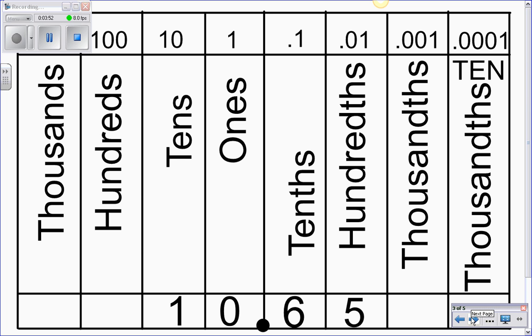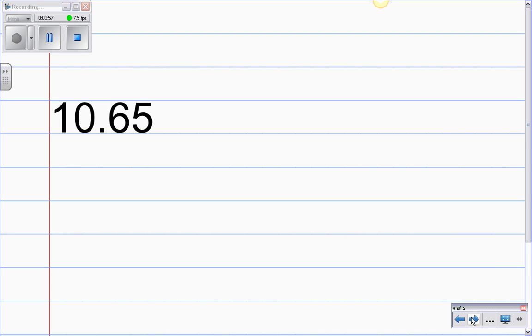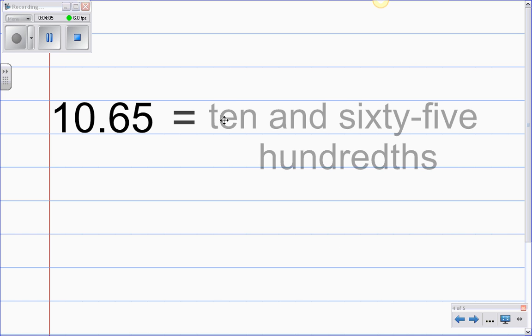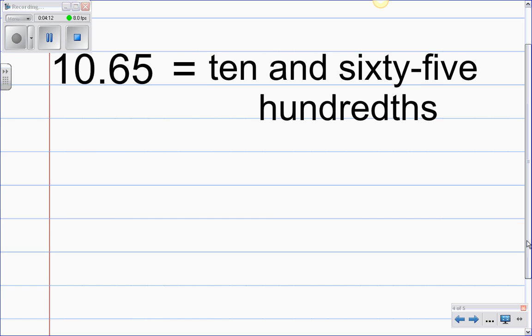So we're starting out with 10.65 which is ten and sixty-five hundredths. So this is the way it looks in word form, ten and sixty-five hundredths. And again, we're going to write it in fraction form the way that we say it.